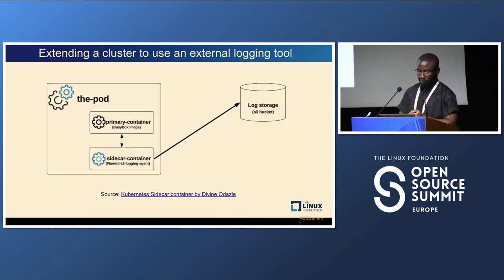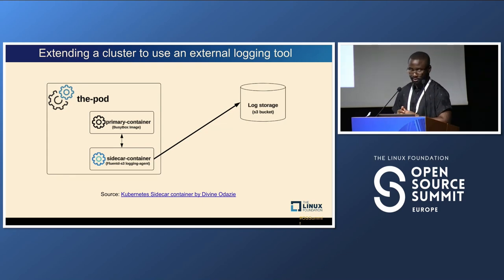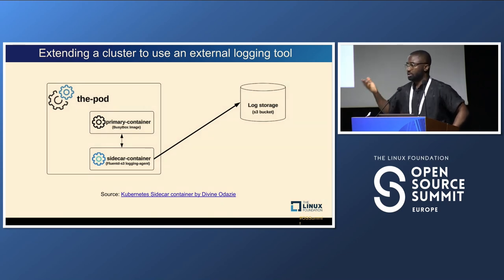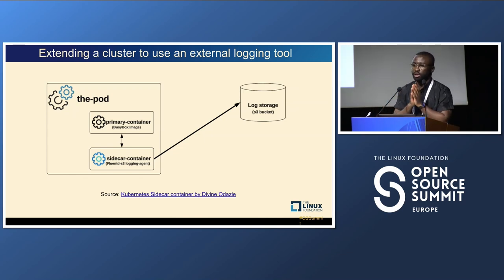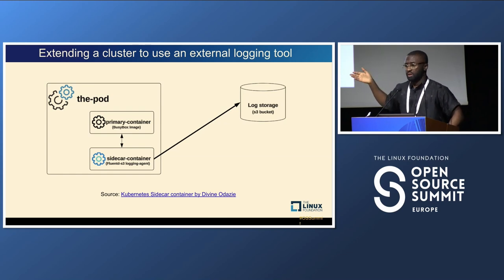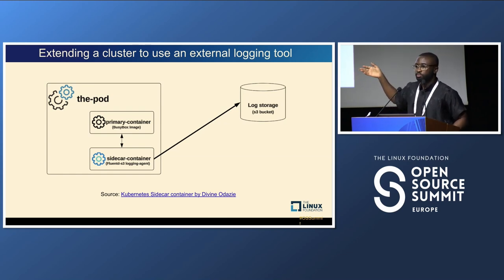For external logging, a pod can have multiple containers — a sidecar container streams logs to Fluentd. You could use a shell script to stream logs, but Fluentd is a unified logging layer that lets you perform more complex actions on your logs with better performance. You can then store logs in an external log backend, like Amazon S3 or MinIO deployed on-prem or your own server.